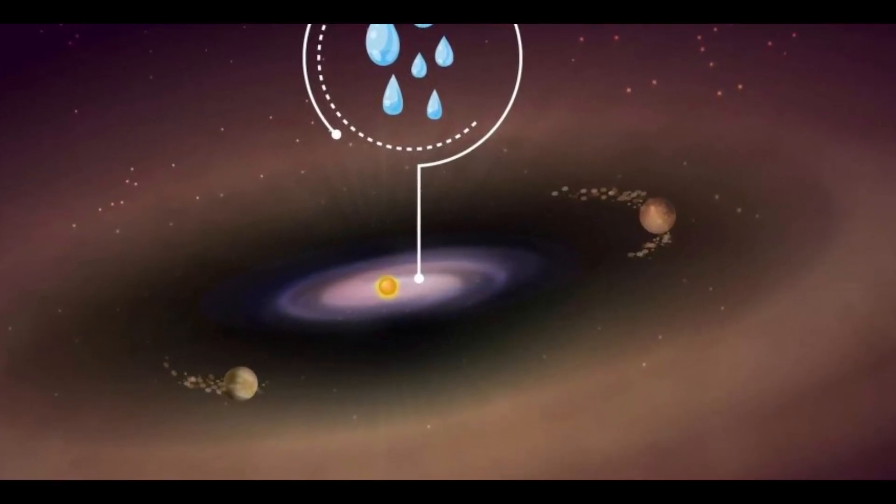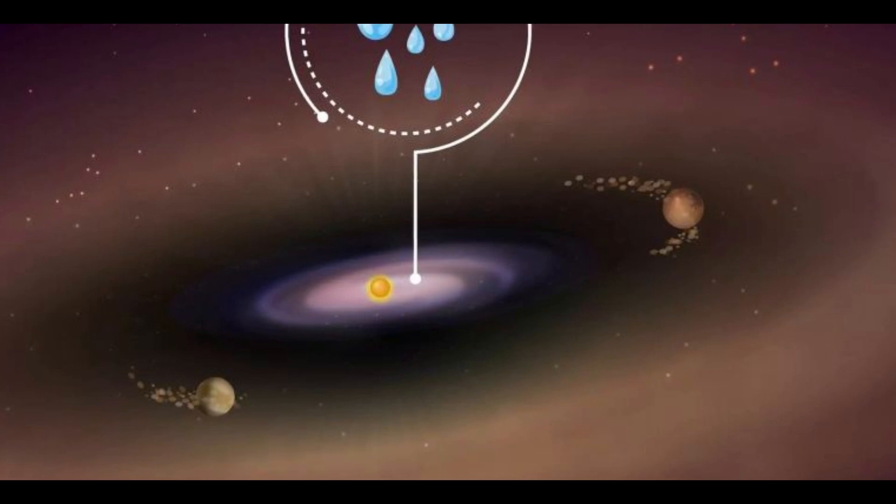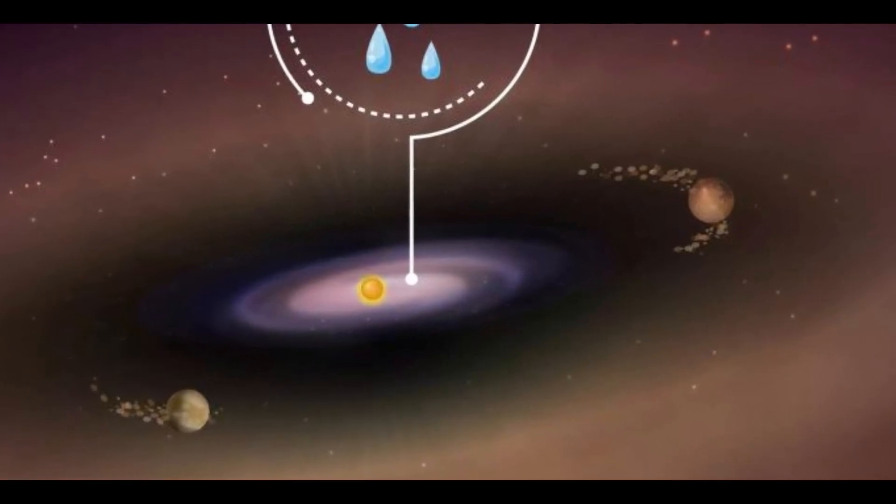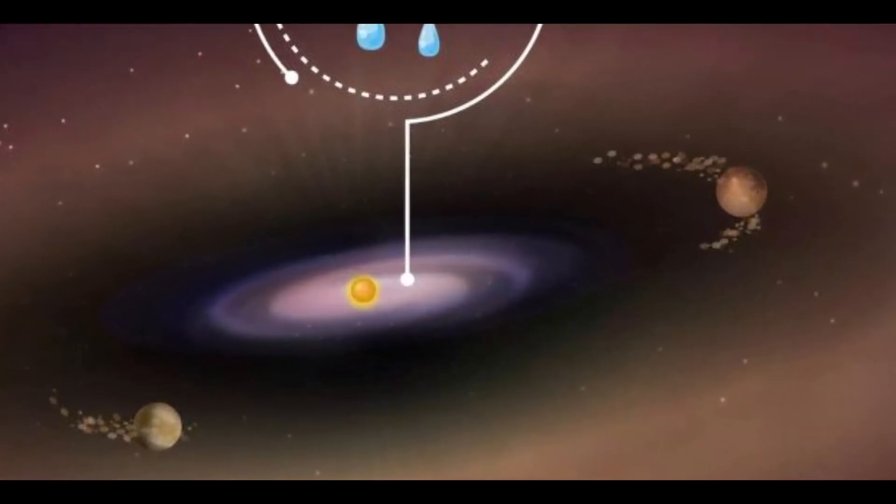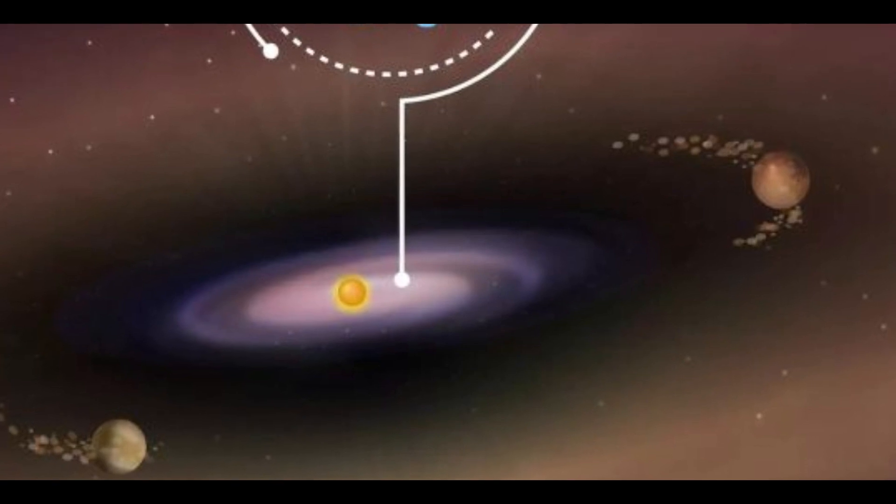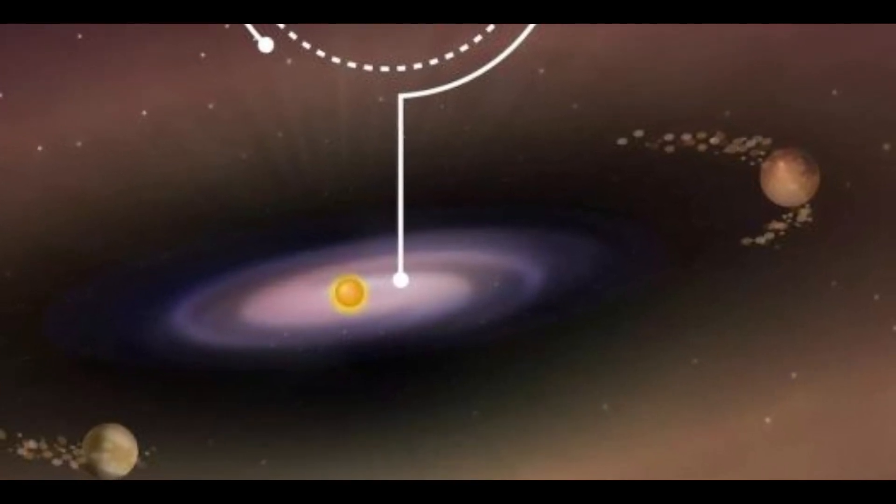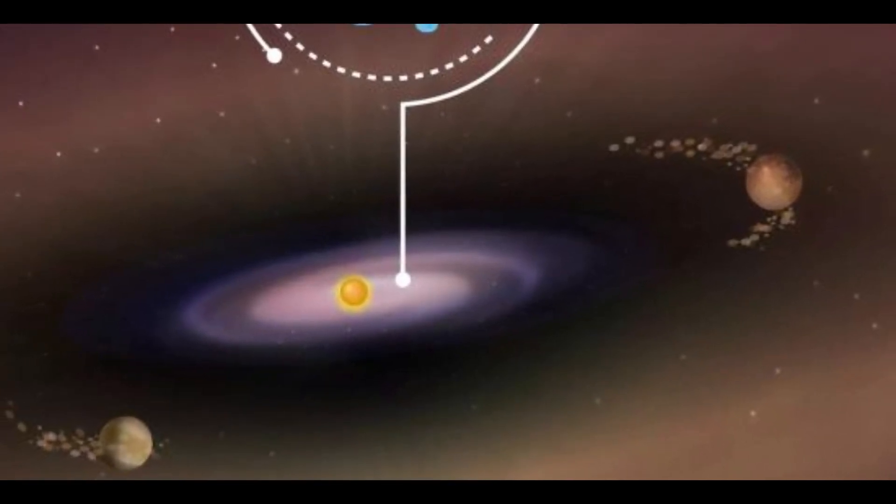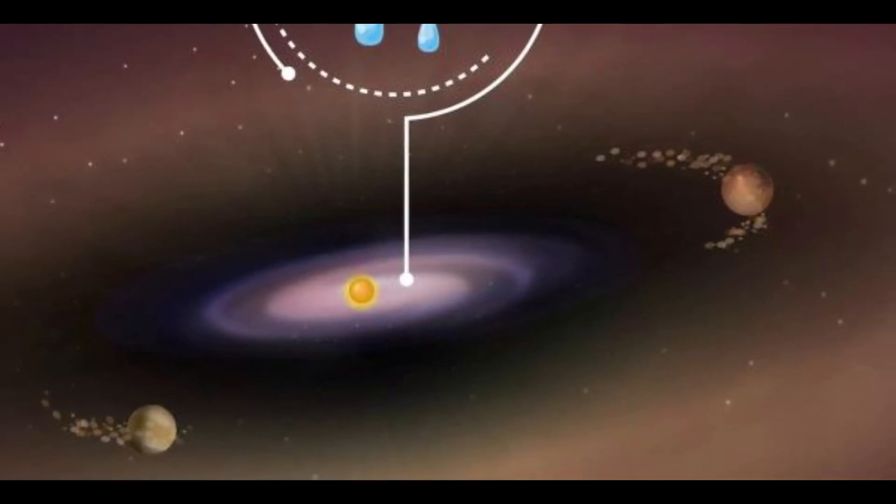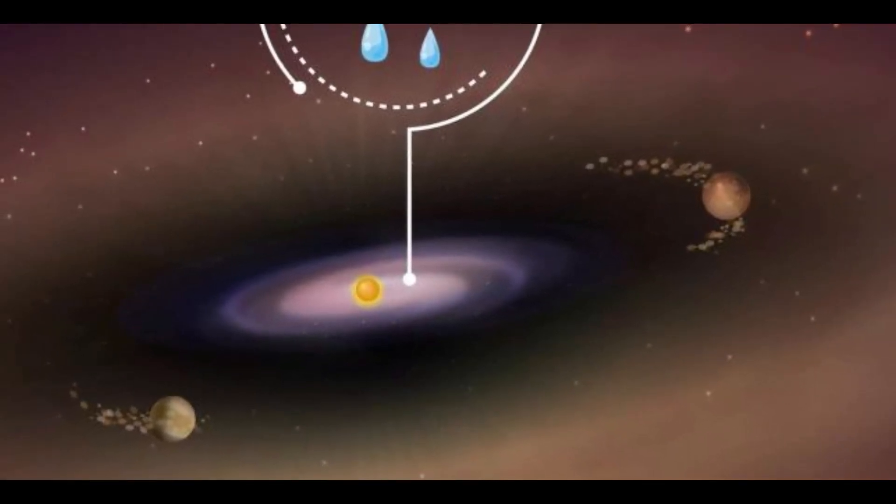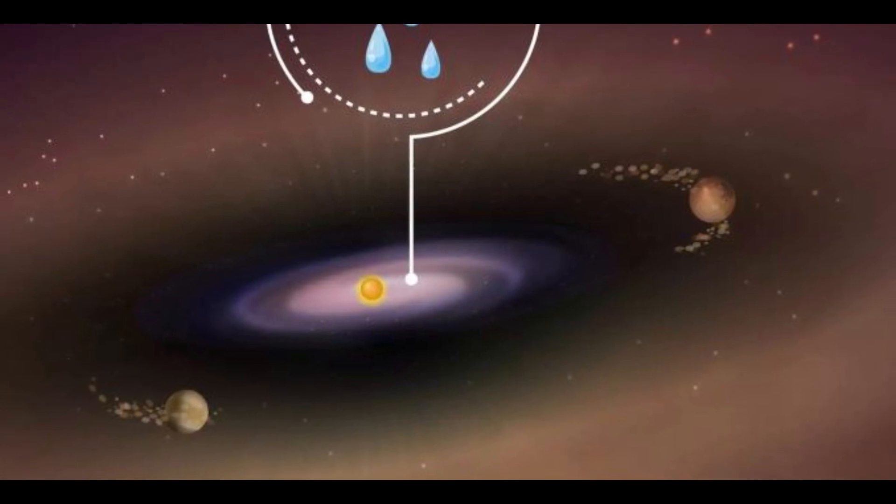Almost everywhere on Earth where there is water, there is life. As a result, the hunt for the presence of water has been the main focus of the search for potentially habitable exoplanets. Previous studies revealed that water-bearing asteroids impacting our infant planet's surface after it originated, provided the newborn Earth with a significant portion of its water.